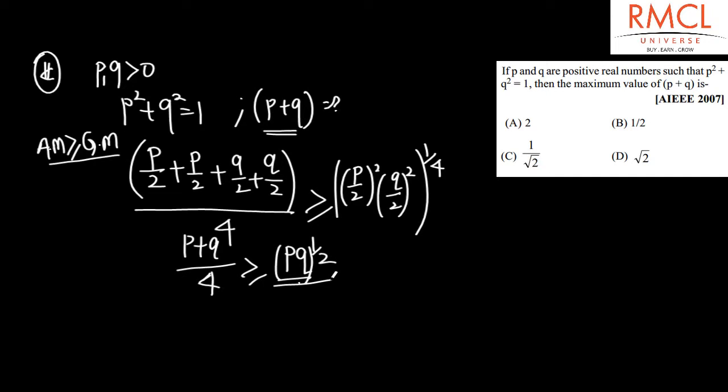So p + q, the under root that comes, 2 times that will give us p + q. If we talk about p + q squared.